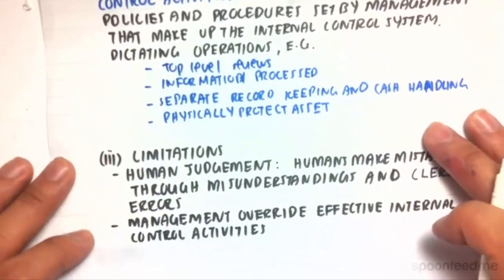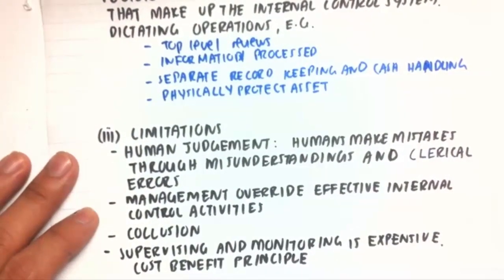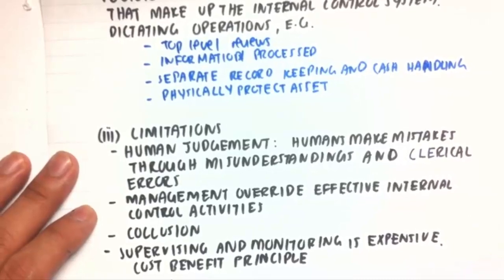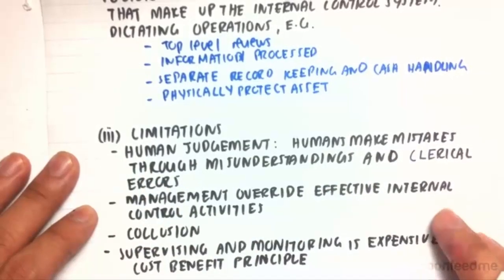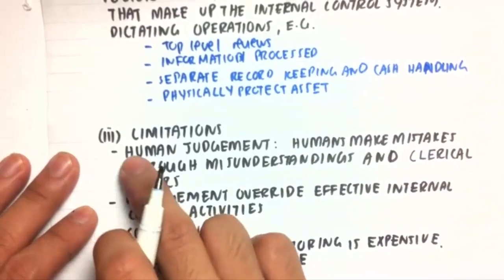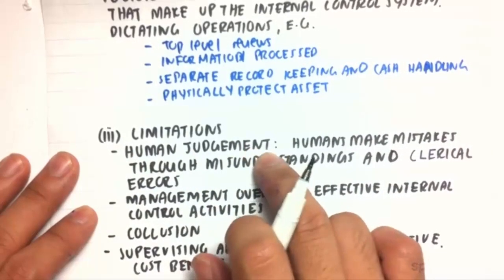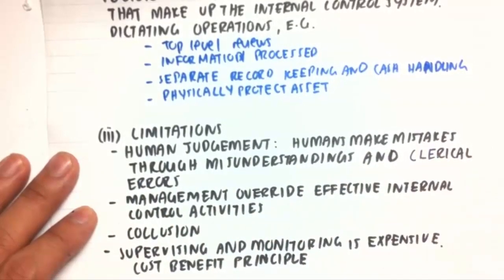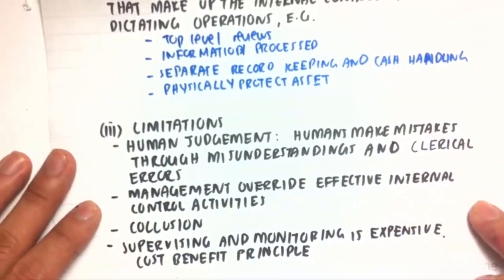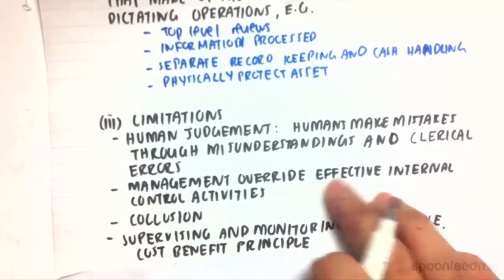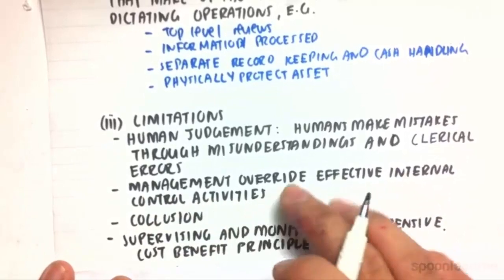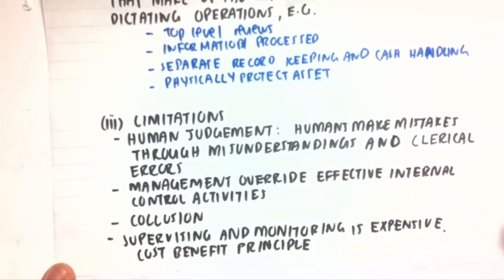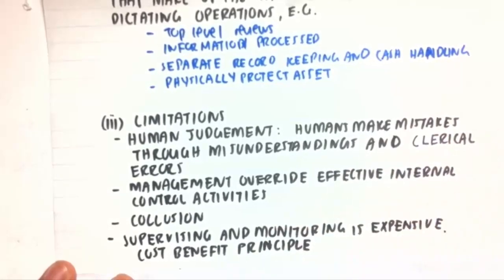And lastly, we're going to look at the limitations of internal control. Internal control deals with people and personnel, so inherently there are problems with human judgment — humans make mistakes through misunderstandings or clerical errors like recording errors, and that can affect internal control. Management can also override effective internal control activities if there isn't a clear communication channel — they don't know what they're doing right or wrong, and as a result they might cut something because it's too expensive or they don't know how well it's working.